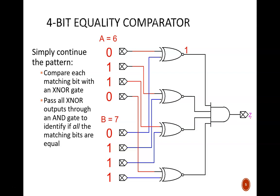Similarly, bit positions 2 and 1 match each other. But the least significant bits differ. 0 for A and 1 for B. Therefore, this bottom XNOR gate produces a low. Because of that single low input to the AND gate, the final output is low.